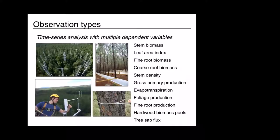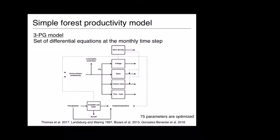One of the powers of a mechanistic process-based model is the ability to smartly use diverse sources of data, because the model actually represents those processes. Fundamentally, it's a time series analysis across space and time with multiple dependent variables. We use a simple forest productivity model focused on forest productivity, not worrying about soil carbon. Importantly, it's a monthly model, which helps deal with computational issues that might come with running a daily or sub-daily model.